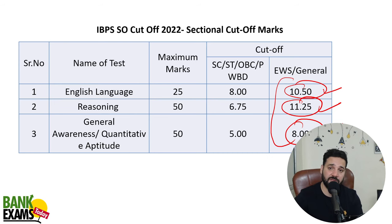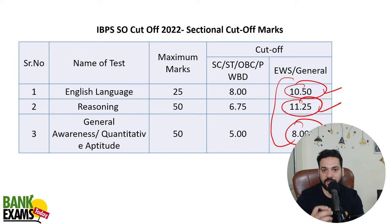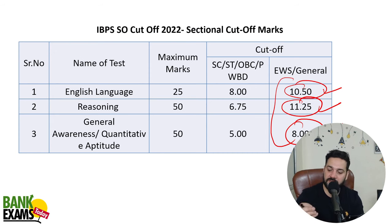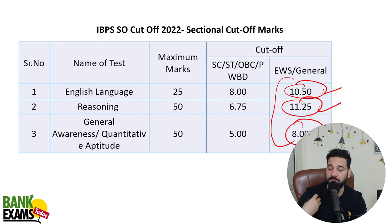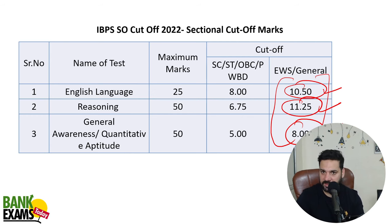Reasoning mein 11 marks kai logon ke nahi aate, aur saadhe 10-11 marks English mein kai logon ke nahi aate. Although the overall cut-off is very low, the sectional cut-off is a problem for many students. Bohut sare students jo overconfident hokar jaate hain, reasoning ke exam mein bohut sare students fail hote hain. So please keep that in mind — pre-ke exam mein agar koi fail hota hai, toh uska main reason sectional cut-off hai, na ki overall cut-off.